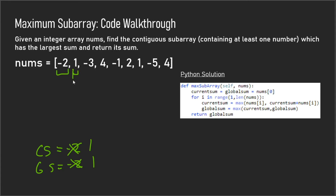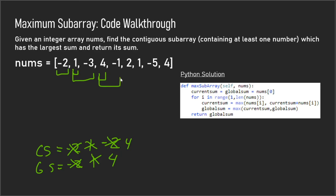We get to negative 3, the subarray increases in size, and our current sum becomes negative 2. We get to 4 and the subarray just becomes 4, and we update current sum and global sum. We get to negative 1 and we check to see if negative 1 plus the current sum is greater than just negative 1 itself — it is, so we increase the subarray and the current sum becomes 3, while our global sum doesn't change.